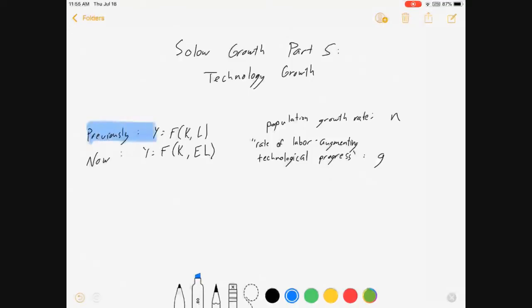So, previously, this was our production function, f of k and l. And then it was constant returns to scale, so we divided everything by l to make little f of little k. It was great. If you haven't watched those videos and you don't know what I'm talking about, you should probably go back.